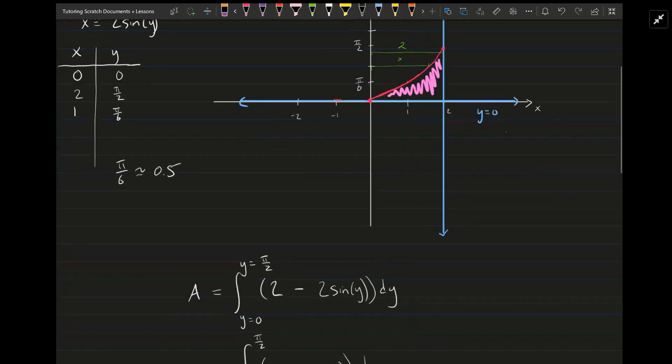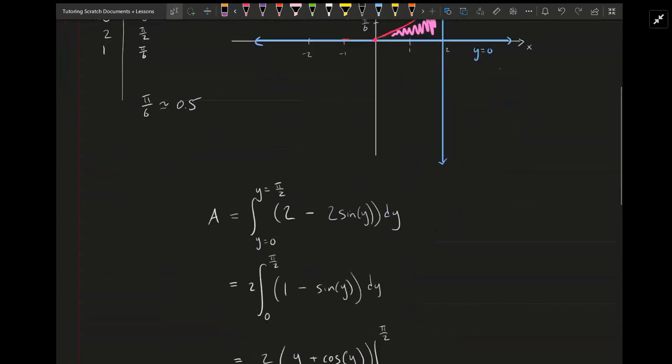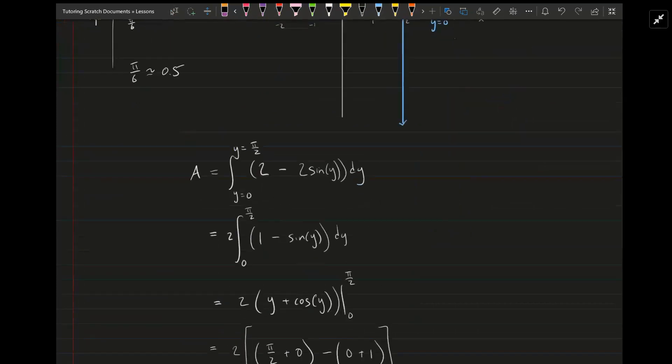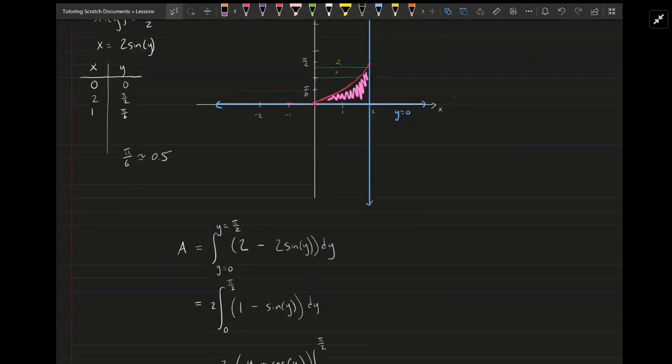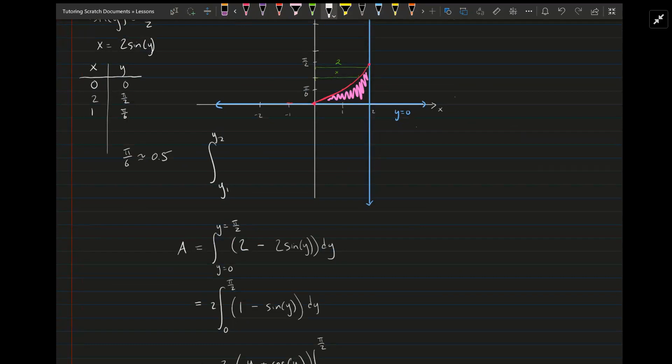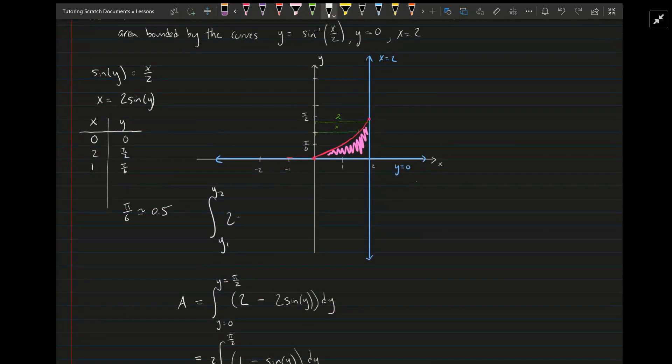So the way that you do that is basically what I've written down here. I'll explain how I got this integral real quick. So taking the integral from some y1 to y2 of 2 sine of y dy, that would give us this area right here that I'm drawing in right now. But that's not exactly what we want.